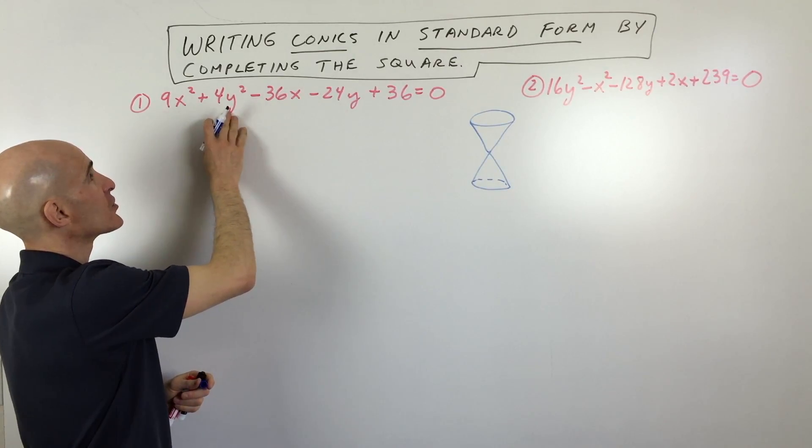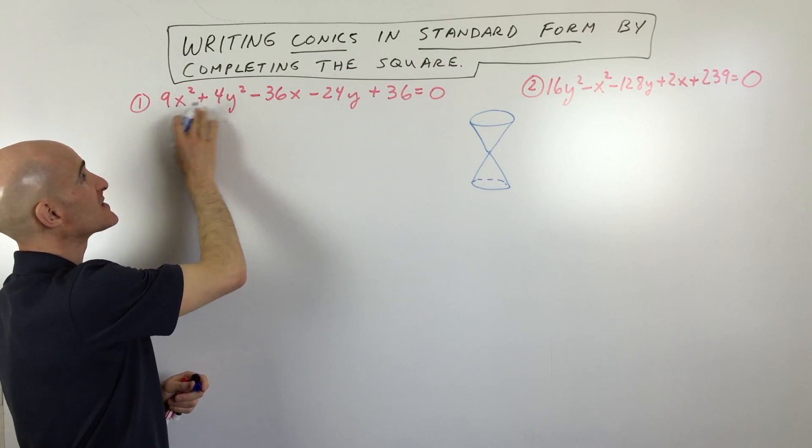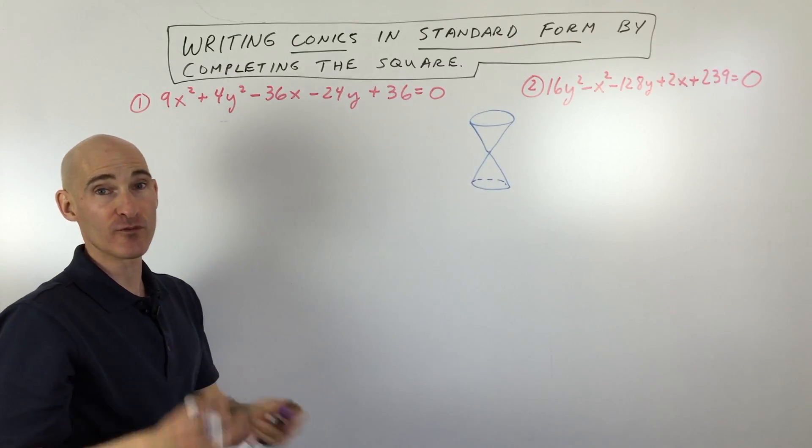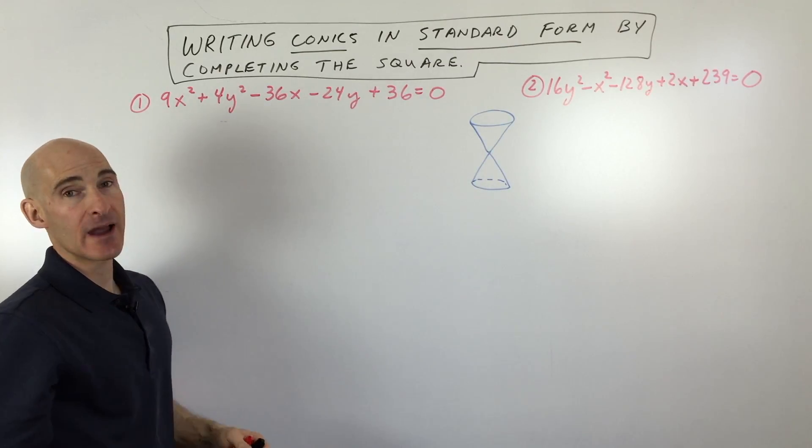Because we have an x squared and a y squared term and they're the same sign, meaning they're both positive or they're both negative, we know that it can't be a hyperbola.